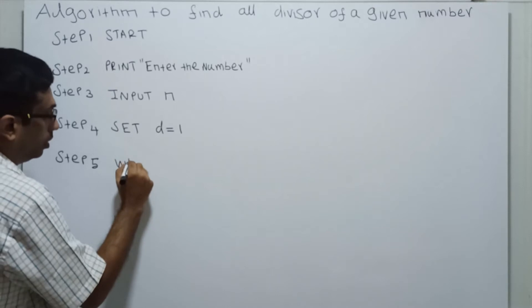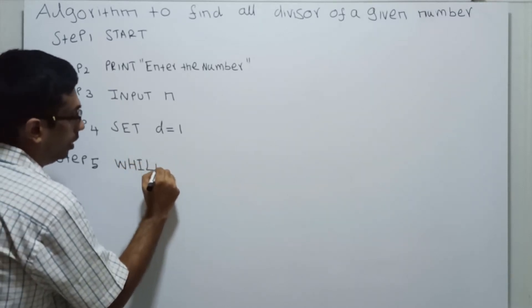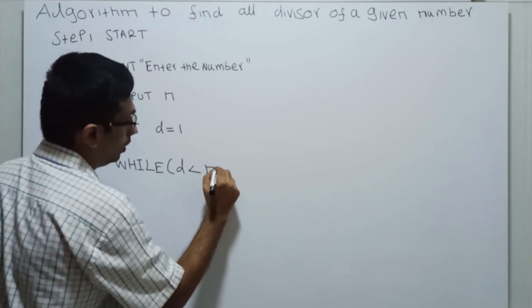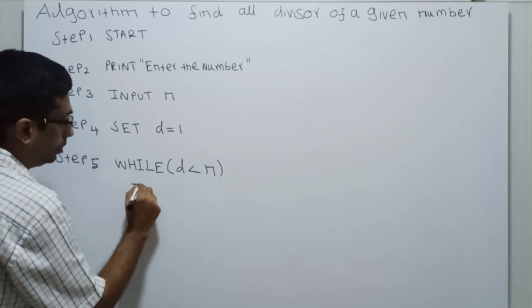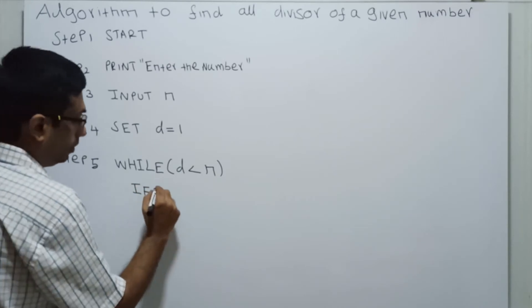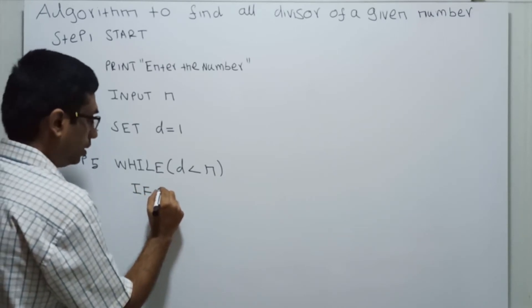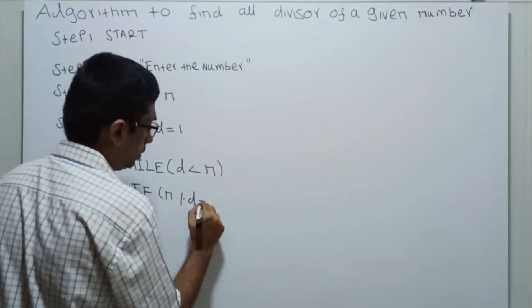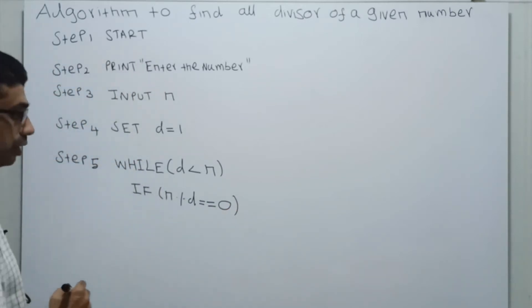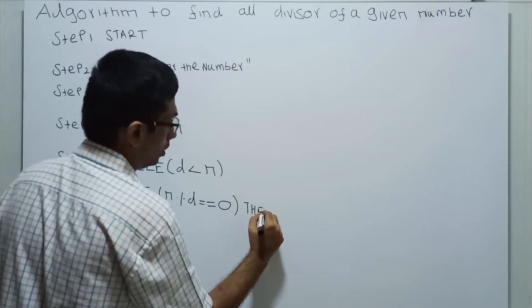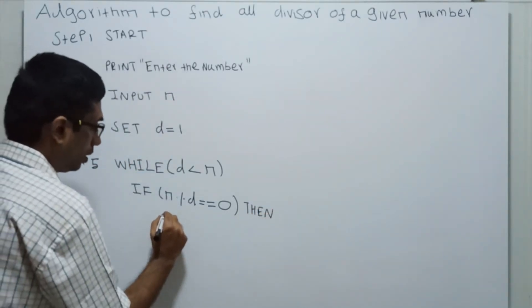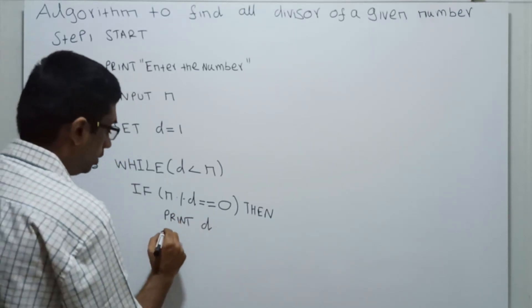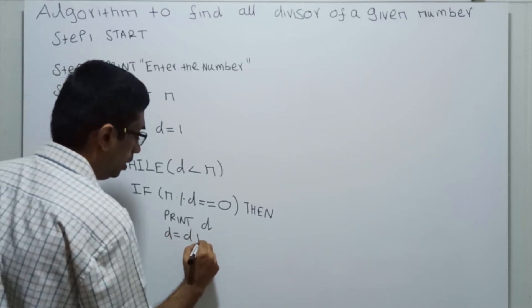While D is less than N. I am checking if N mod D equals 0, then print D and D = D + 1.